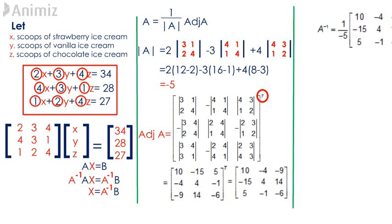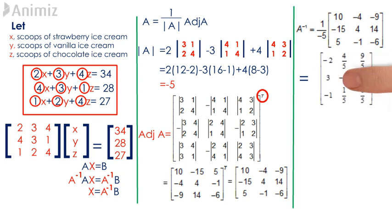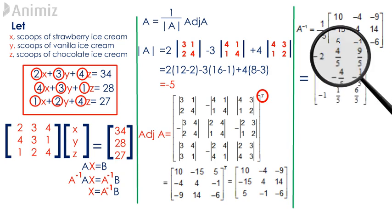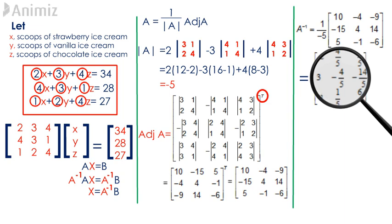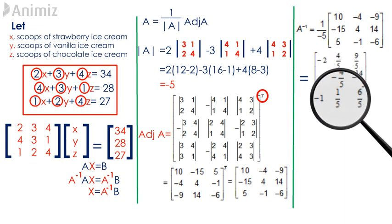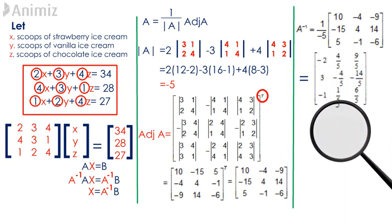Substituting the value of the determinant of A and the adjoint matrix of A into the formula for A inverse gives us A inverse to be: negative 2, 4/5, 9/5 in the first row; 3, negative 4/5, negative 14/5 in the second row; and negative 1, 1/5, 6/5 in the third row.